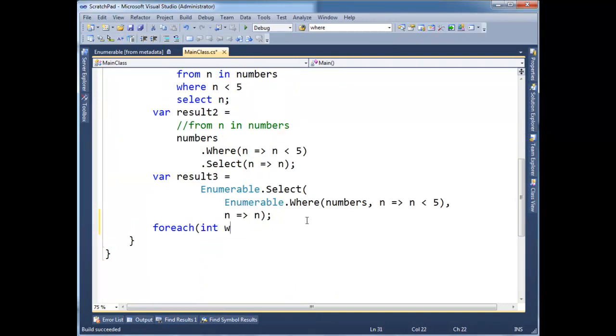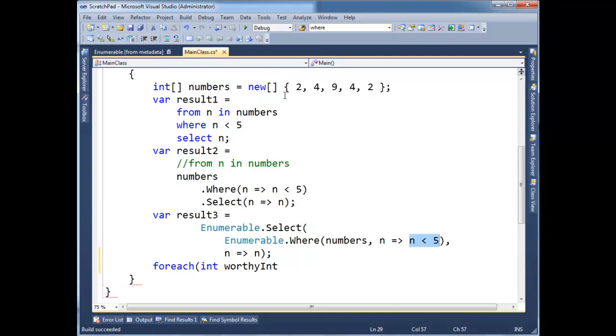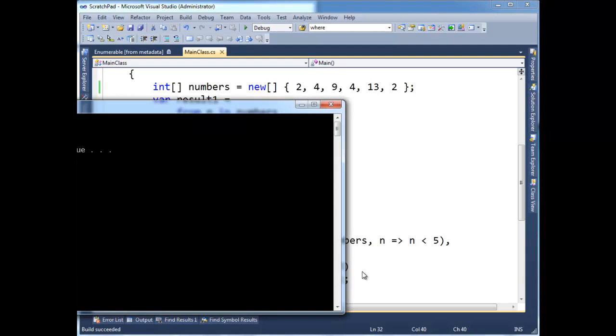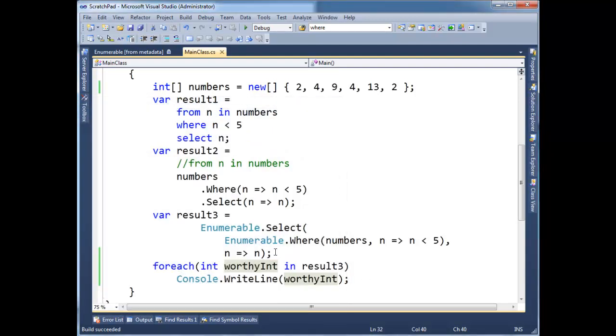For each int worthy int, and the reason I'm calling it worthy is because that int passed the gauntlet, and the gauntlet in this case is, if you're less than five, then we'll let you through. And it looks like two is less than five, four, but nine's not. So most of these ints are actually worthy of the gauntlet, in fact, just for fun, I'm going to throw a 13 out here, because it's not. So for each int worthy int in, and we can take any of these results, because these results are all the same query, just rewritten by the compiler, results three, and then we'll write line worthy int. So if we run that, we see two, four, four, two, and we don't see the output from my where clause.